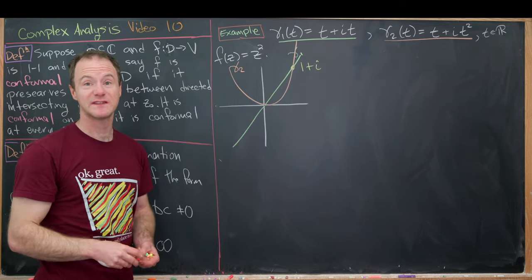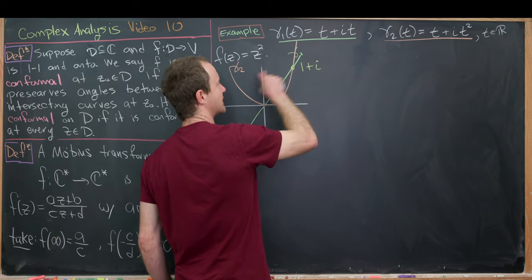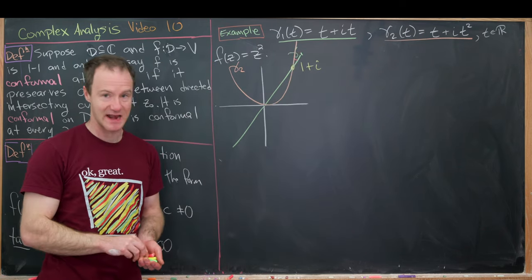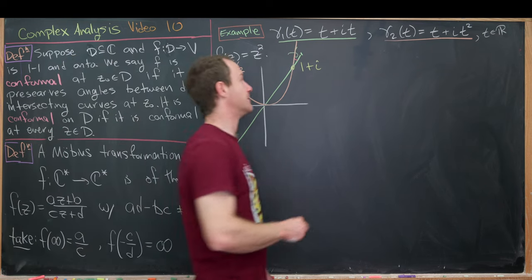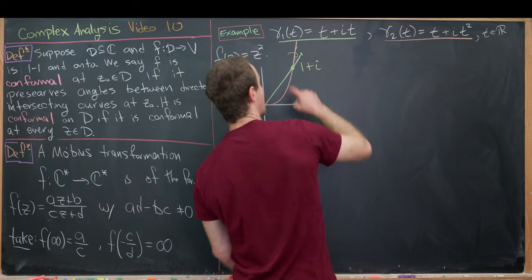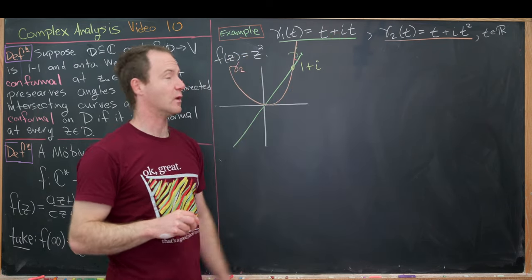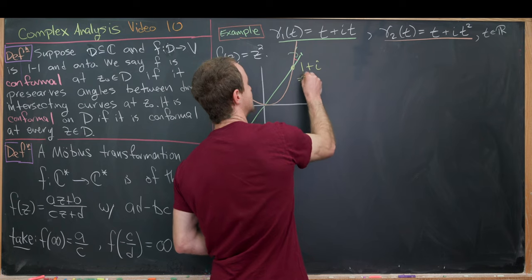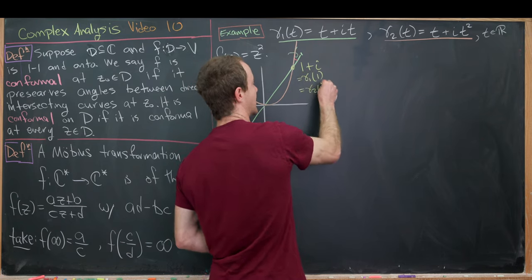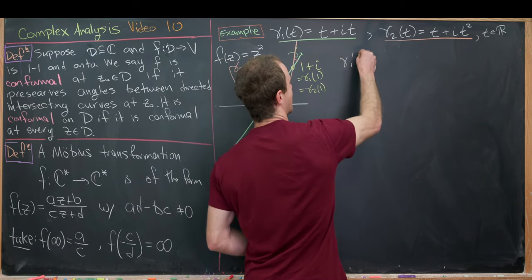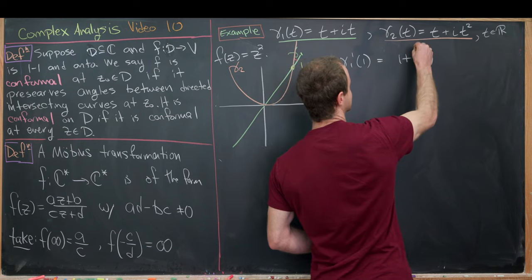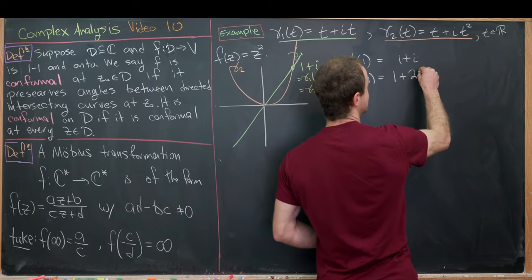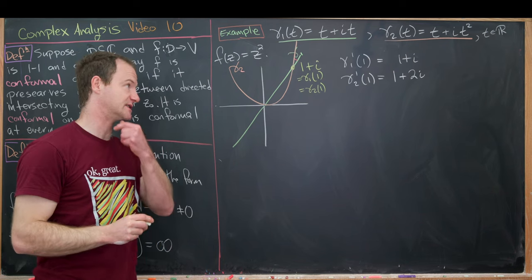We won't draw the tangent lines here as it'll get messy, but we'll find the cosine of the angle at the intersection point 1 + i, which corresponds to t = 1. Computing the derivatives: γ₁'(1) = 1 + i, and γ₂'(1) = 1 + 2i. That's easy to calculate just by taking the derivative and plugging in t = 1.